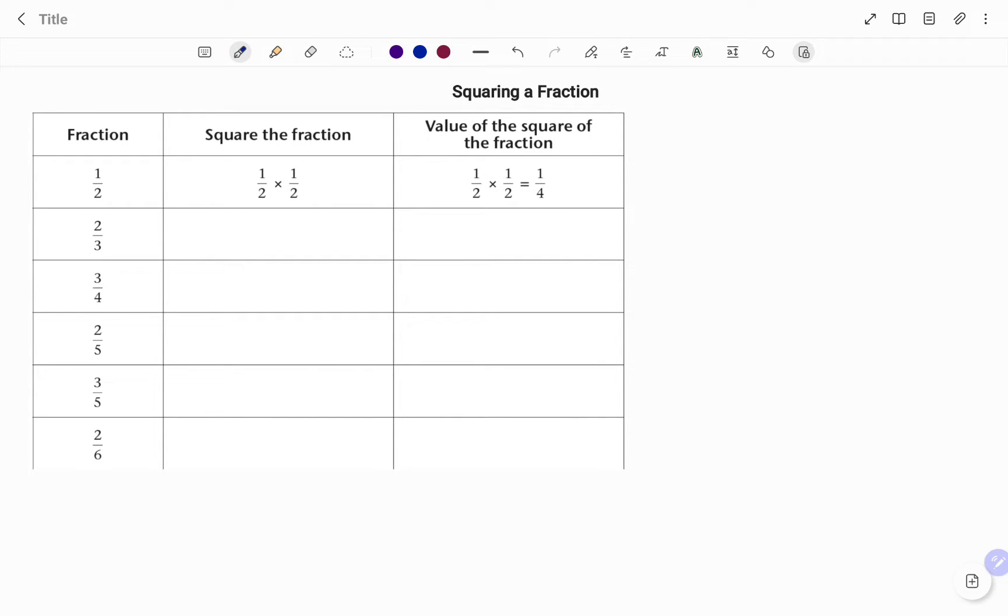Squaring or cubing a fraction or a decimal fraction is no different from squaring an integer. For example, if I'm to square 4, what it means is I'm going to multiply 4 twice, that is 4 times 4, which is 16. Therefore, applying the same principle, the first example has been given.